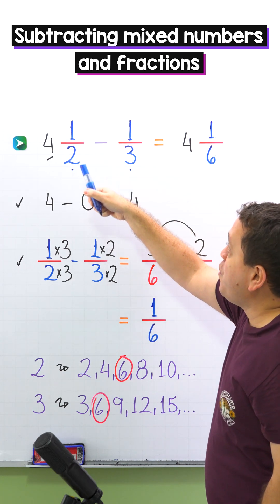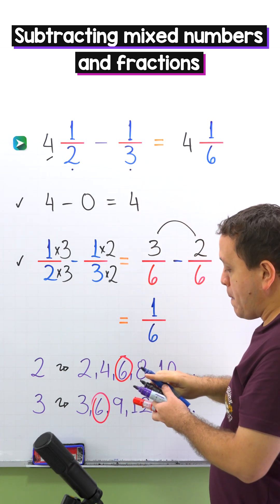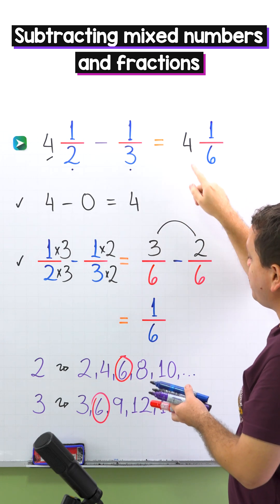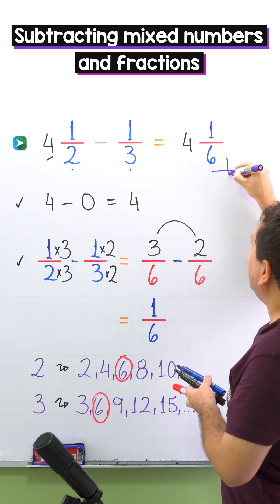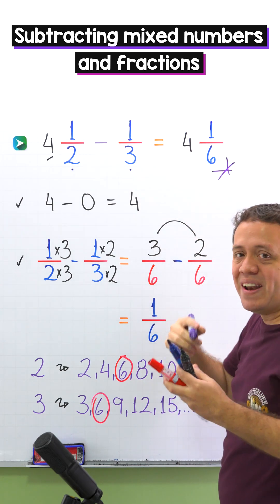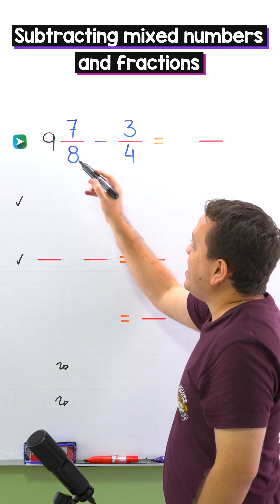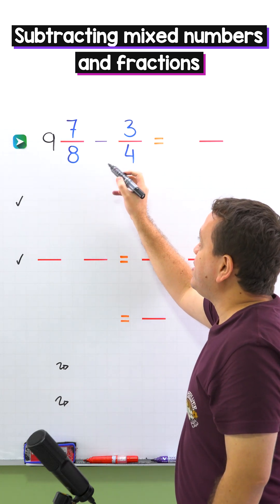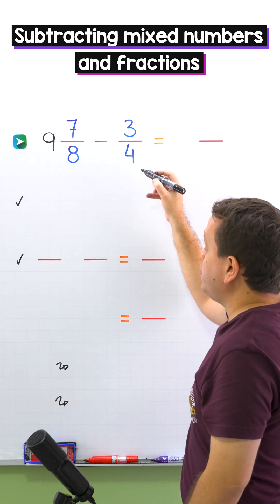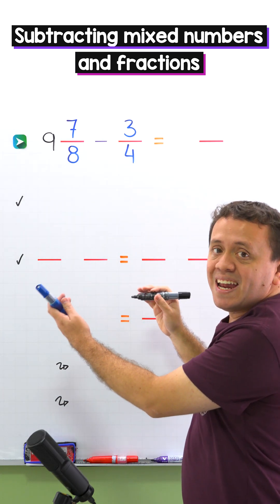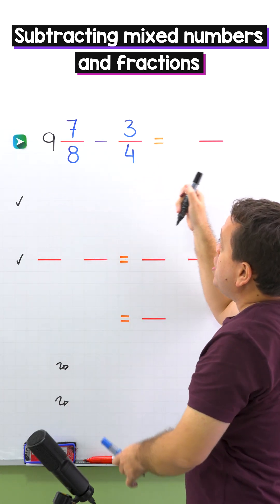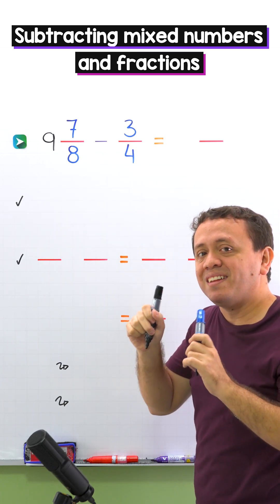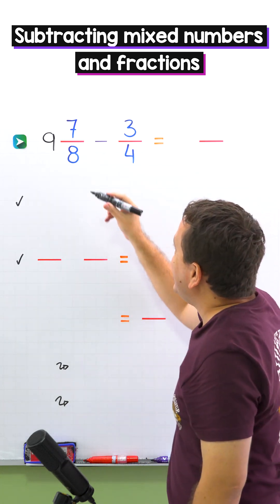So four and one half minus one third gives us four and one sixth. Let's move on to another example. In the second example we are going to subtract nine and seven eighths minus three fourths. Once again we have a mixed number and a fraction, and to find the difference we start by subtracting the whole numbers.